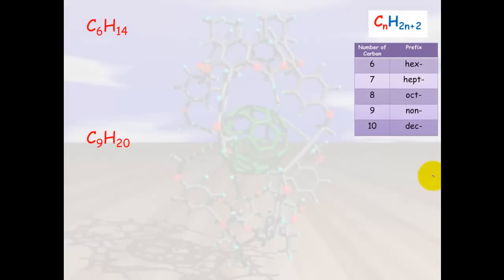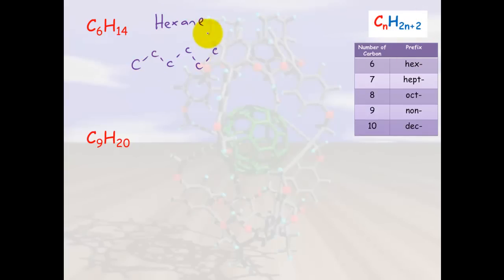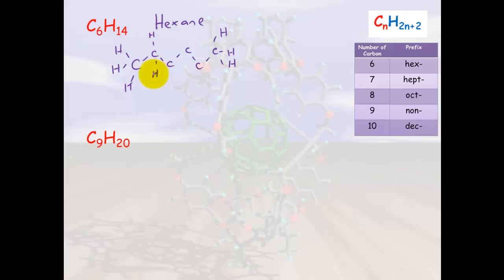With six carbons, we can see the prefix is hex- and it fits the alkane formula, so it must be hexane. We draw those six carbons with hydrogens coming off them. You'll find that the end carbons will always have three hydrogens, and the middle carbons will each need two hydrogens — this gives each carbon four bonds.